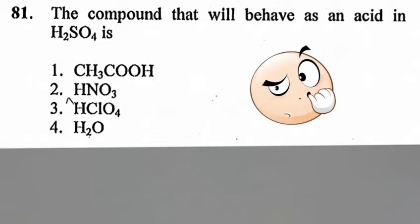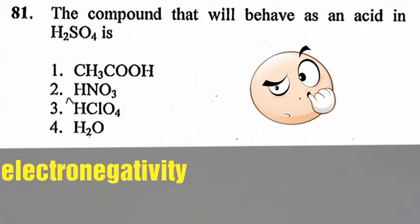Let us consider another question from June 2013 with a similar concept. The question is: which compound will behave as an acid in H2SO4? When you consider the electronegativity of chlorine and sulfur, chlorine is more electronegative than sulfur.